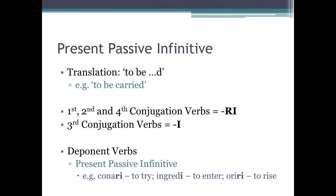And finally, deponent verbs. Just to remind you, these are passive in form but active in meaning. They form their infinitives like present passive infinitives. A few examples include: conari, meaning 'to try'; ingredi, meaning 'to enter'; and oriri, meaning 'to rise.'